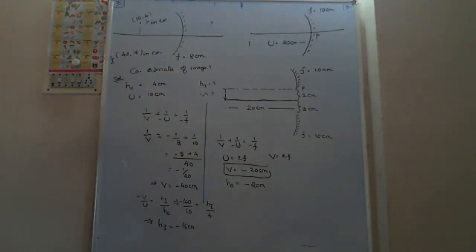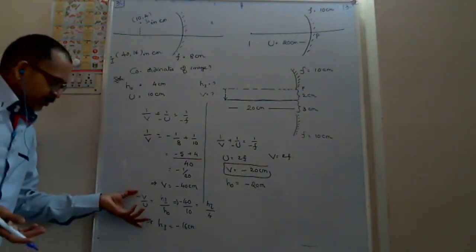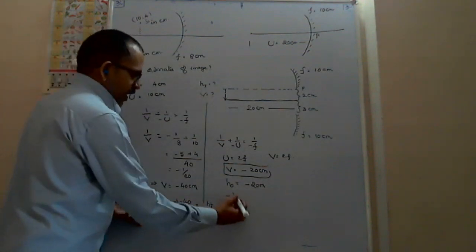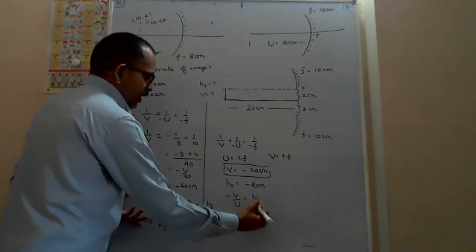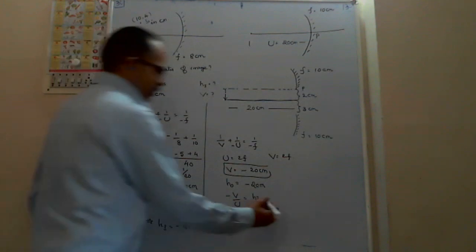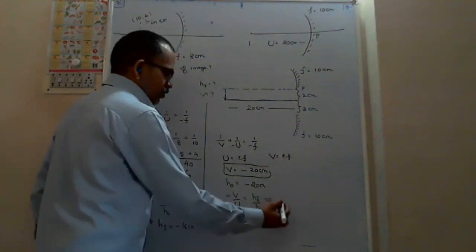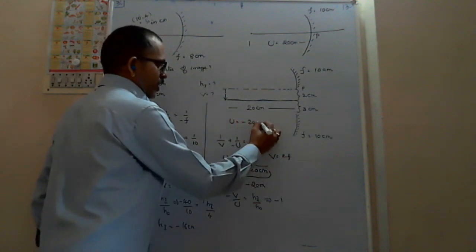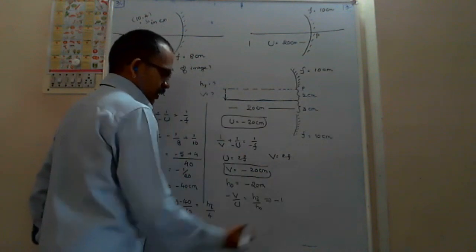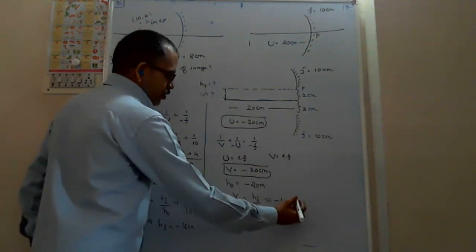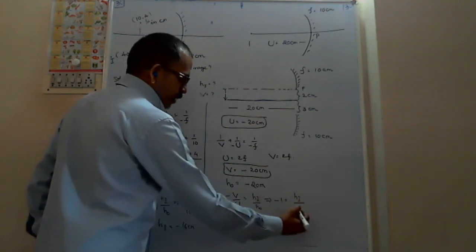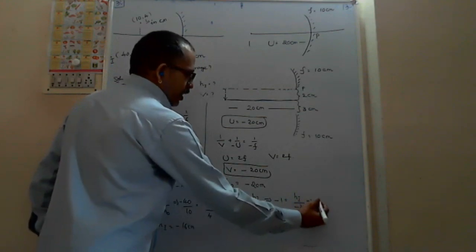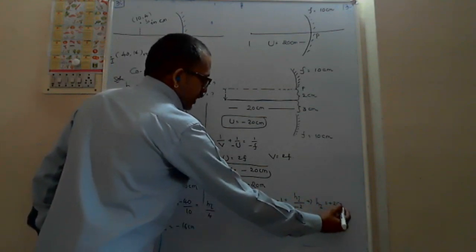To find out the height of image, using the magnification formula: minus V by U equals H_i by H_o. That implies minus V by U is 1 — both are same, U equals minus 20, V is also minus 20. So V by U equals minus 1, which equals H_i by H_o equals minus 2. Therefore H_i equals plus 2 centimeters.